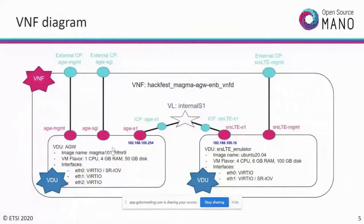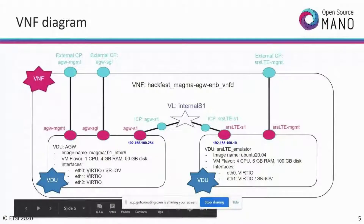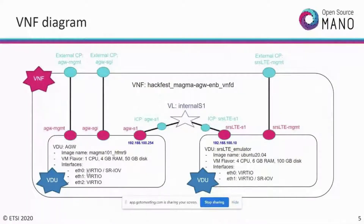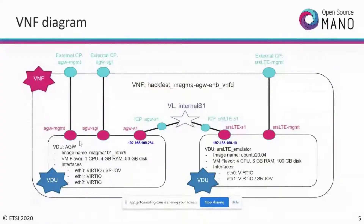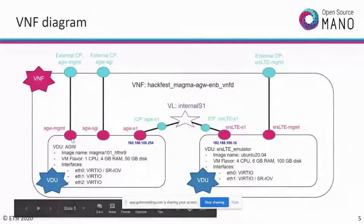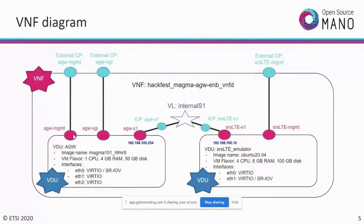This connection point will be used as a reference when the virtual link is created and the service is onboarded. The VDU will spin up, and then needs to connect to the network. The management connection point for the access gateway acts as an anchor point to attach the VM to the network. The first two interfaces are exposed out as external connection points, which are used to communicate between VNFs or outside the network service.